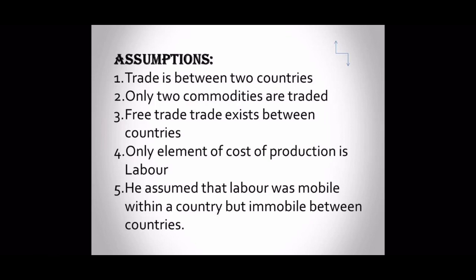Fourth, the only element of cost of production is labor — meaning the product being made in the USA is produced using only labor, and similarly in India. There is no other factor of production contributing to cost. Fifth, Adam Smith assumed that labor was mobile within a country but immobile between countries — meaning USA labor cannot go to India and India's labor cannot go to the USA; they will produce goods within their own country.